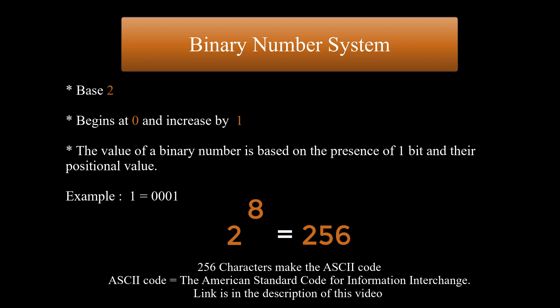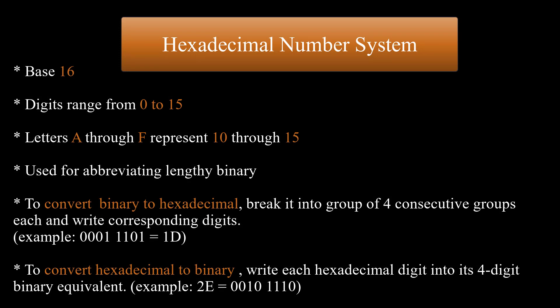I have included a link in the description of this video to all the 256 characters using different number system representation. The hexadecimal number system uses base 16. The digits in this system range from 0 to 15. By convention, the letters A through F is used to represent the hexadecimal digits corresponding to decimals values 10 through 15. Hexadecimal numbers in computing is used for abbreviating lengthy binary representations. Basically, hexadecimal number system represents binary data by dividing each byte in half and expressing the value of each half byte. It's very easy to convert binary to hexadecimal.